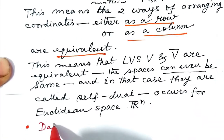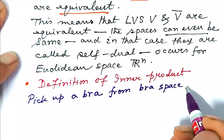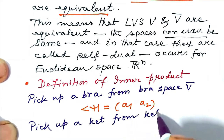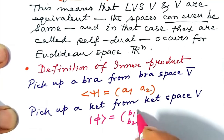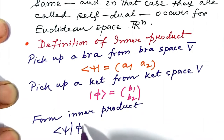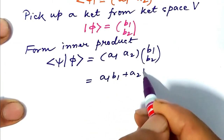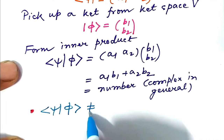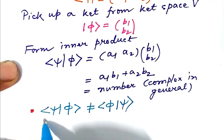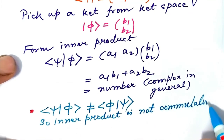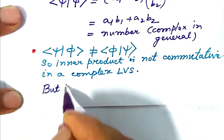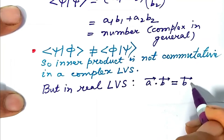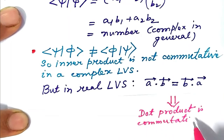Let us define the inner product. Pick a bra from bra space V-bar: bra-psi = row (a1, a2). Pick a ket from ket space V: ket-phi = column (b1, b2). The inner product bra-psi ket-phi equals a1·b1 + a2·b2, which is a number — complex in general. Note that bra-psi ket-phi is not equal to bra-phi ket-psi in general, so the inner product is not commutative in a complex linear vector space, unlike the dot product in real Euclidean space where A·B = B·A.